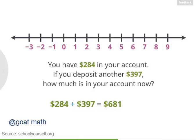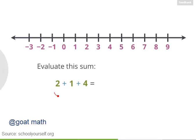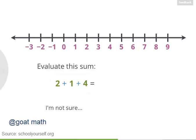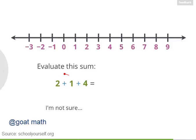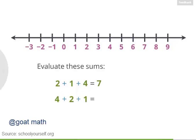Let's look at one last example of addition — try adding three numbers together. What's 2 plus 1 plus 4? So 2 plus 1 is 3, and then adding another 4 gives you 7. What if we switch up the order? What's 4 plus 2 plus 1? And what's 2 plus 4 plus 1?